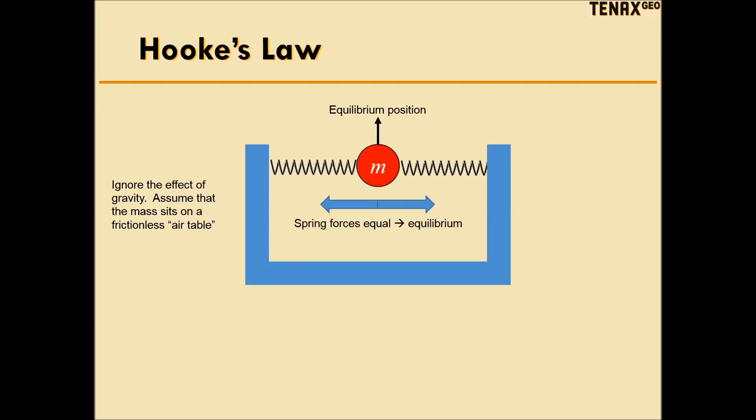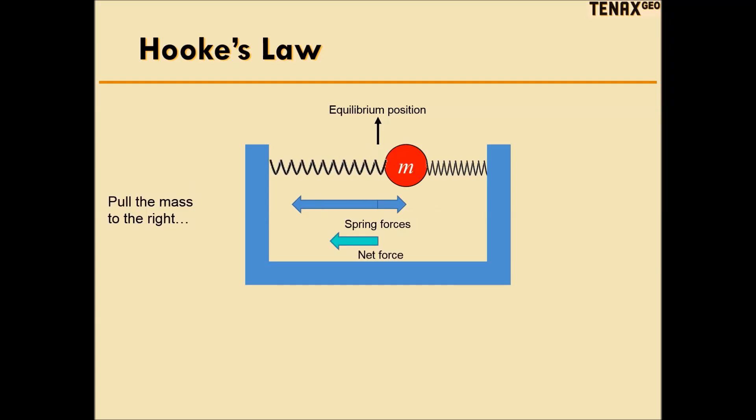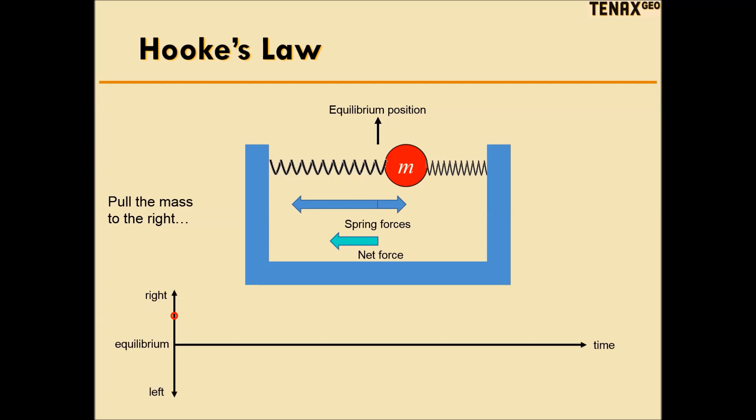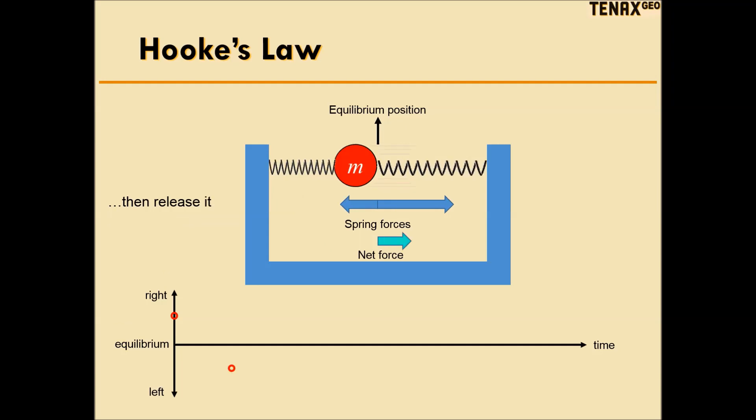Here's a mass mounted between two springs fixed to the wall. The spring force balances out and keeps the mass in equilibrium. If I pull the mass to the right, the spring on the left is under more tension and exerts a greater force than the spring on the right. We're going to plot the horizontal motion of the mass as a function of time. At time zero, the mass is shifted to the right.